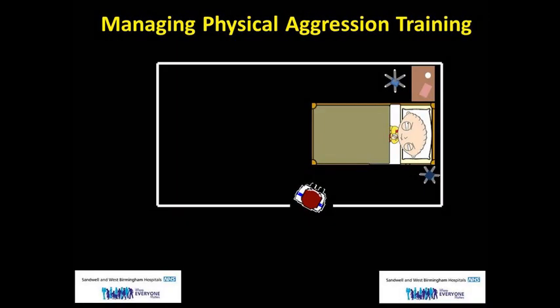In situations where we know a patient has a tendency to react violently or aggressively without warning, it can also be worth considering keeping the bedside rail up. Upon entering the room, where the bedside rail is up, it is harder for the patient to immediately leave their bed and begin to attack us. This strategy has limitations in that the patient may simply be able to drop the bedside rail back down, however it is a consideration worth bearing in mind.